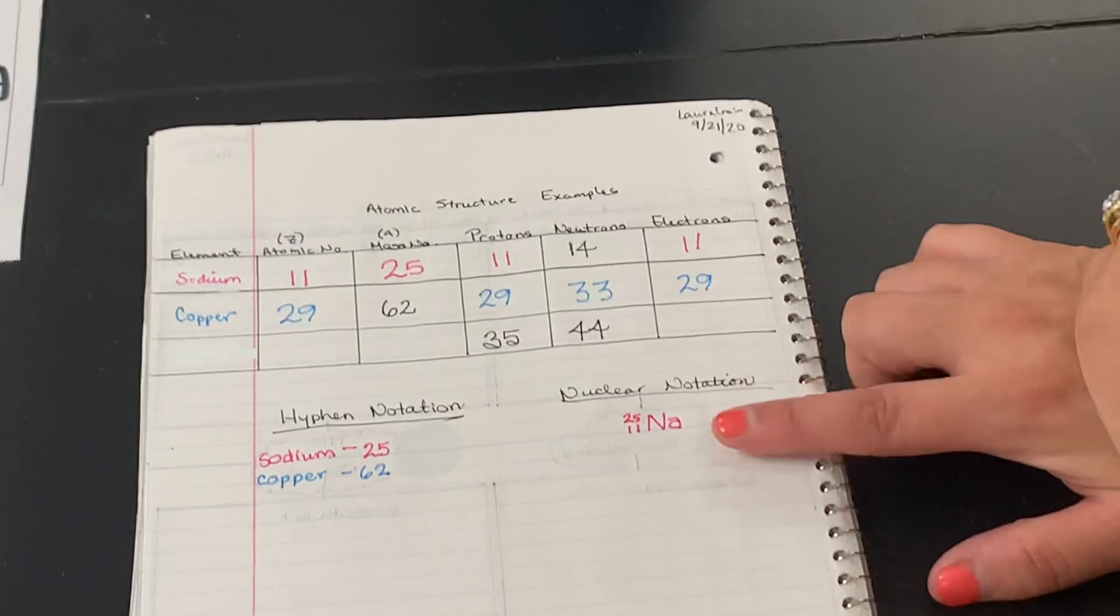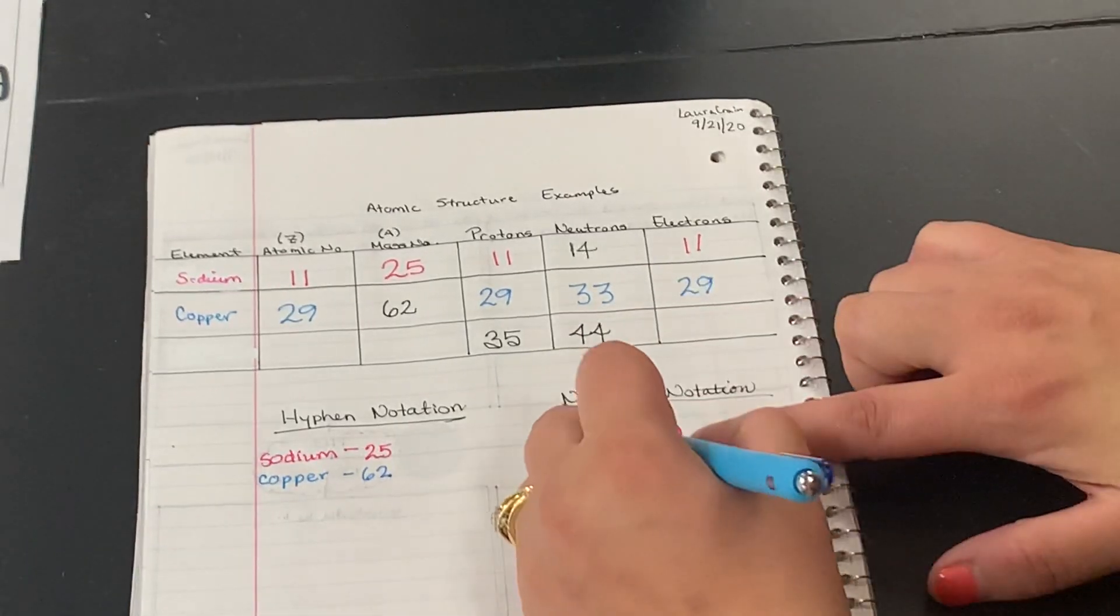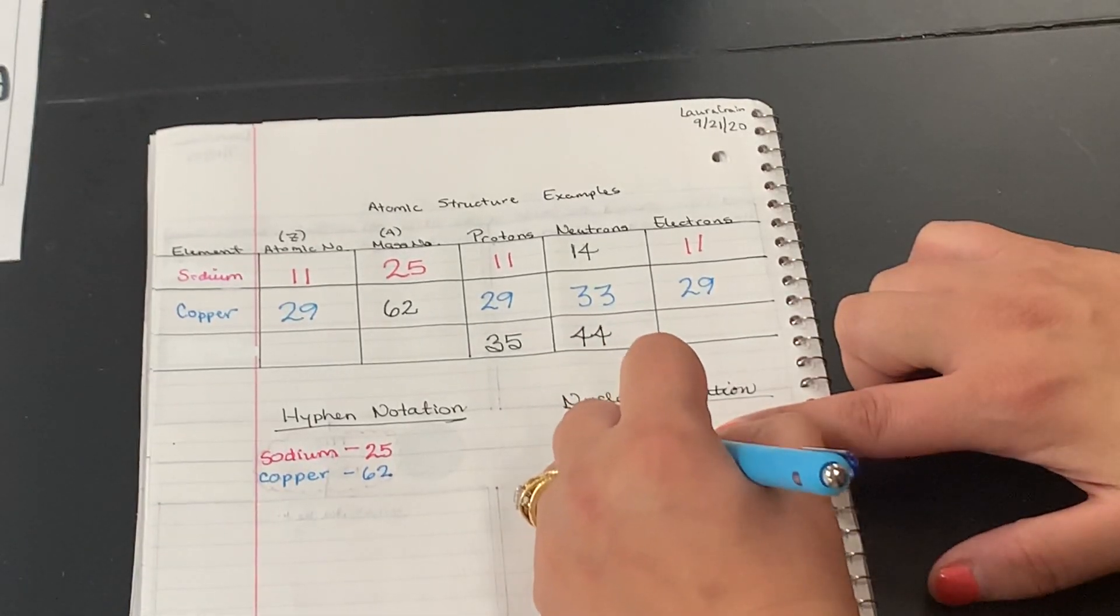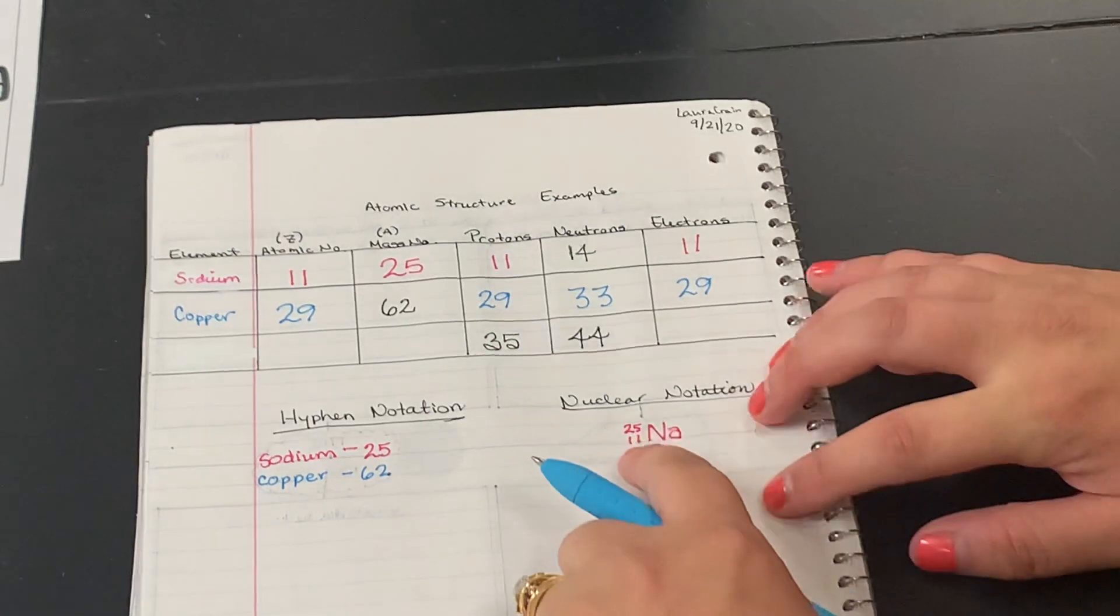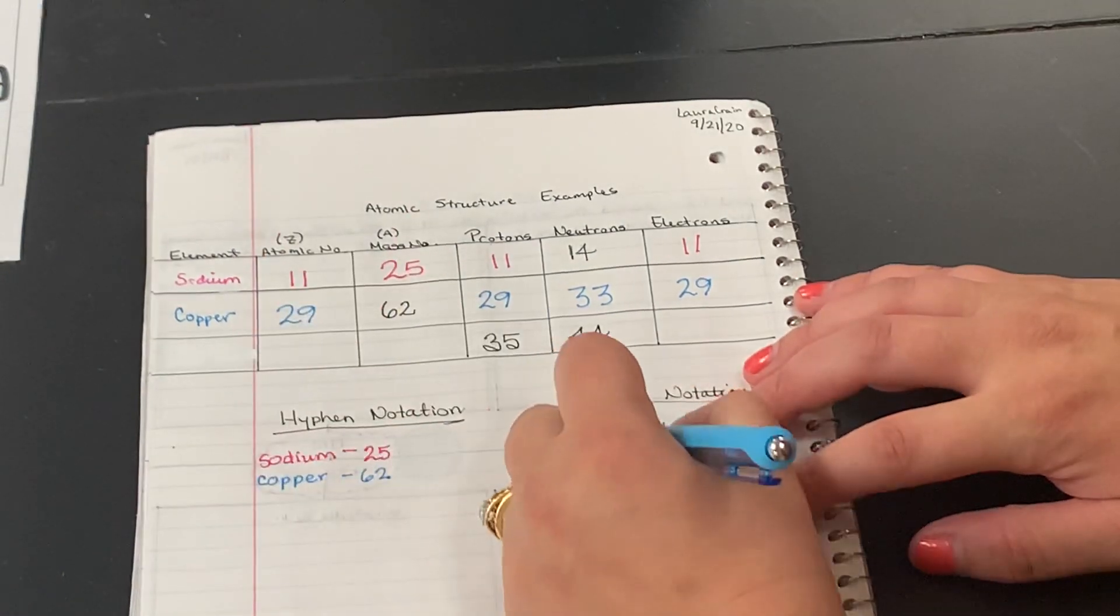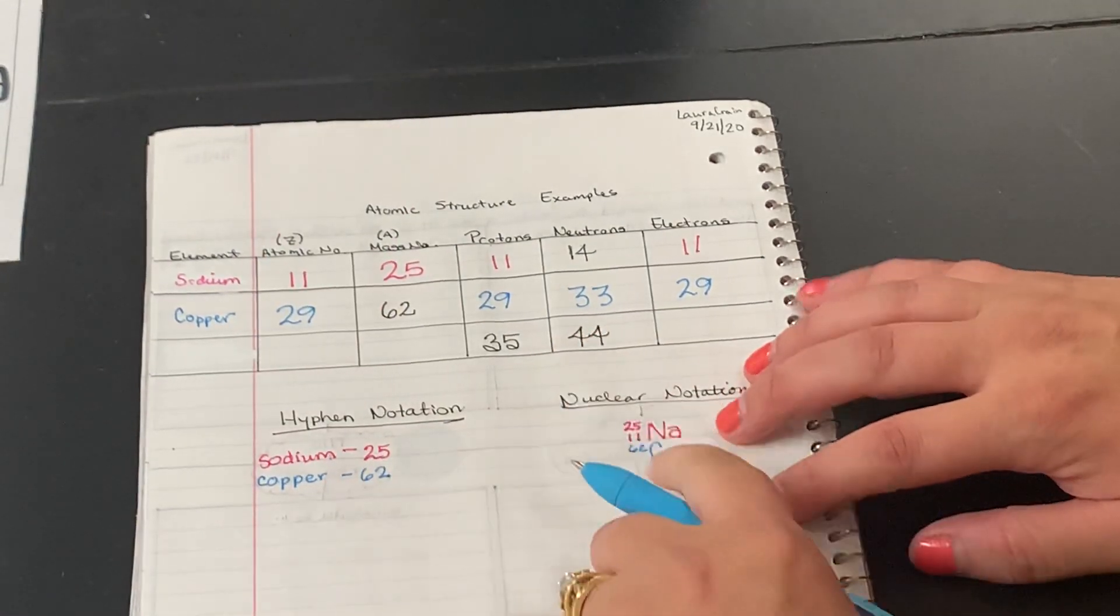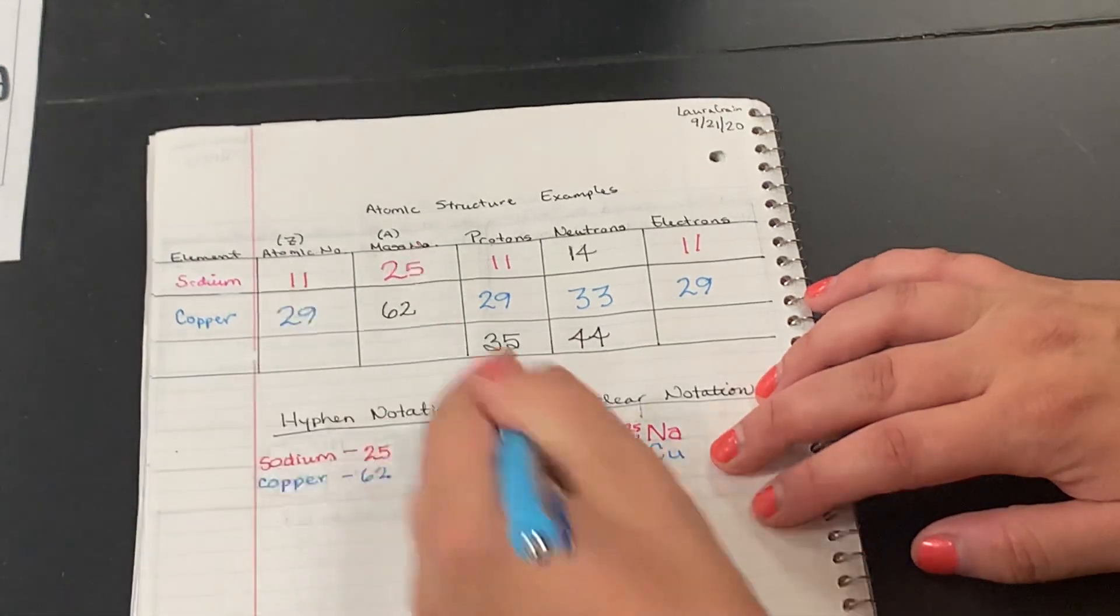Alright, for the nuclear notation, we need the symbol. We just looked it up, it's Cu. Remember to watch those capitals. First letter is capitalized, second letter is not. Then we're going to put the mass number on top, so that's 62 on top. And then on the bottom we put the atomic number, which was 29.